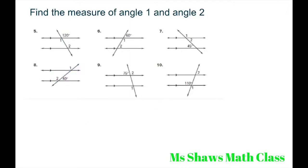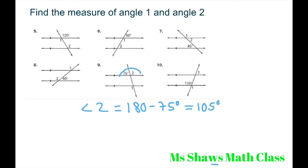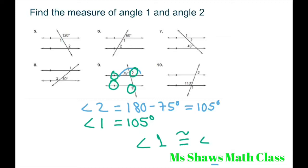And for this one, angle 2 is going to be supplementary with 75. So 180 minus 75 degrees, which equals 105 degrees. So angle 2 is 105 degrees. And if you use your alternate exterior angle theorem, given two parallel lines, they are congruent, so angle 1 is congruent with angle 2.